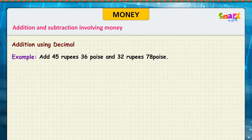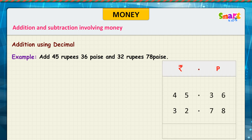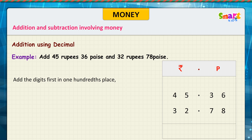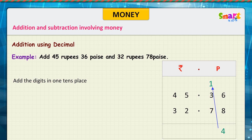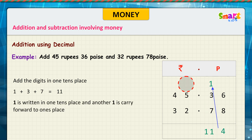Addition using decimal. Look at the problem. First, write 45 rupees 36 paise and 32 rupees 78 paise as 45.36 and 32.78. Add the digits first in the hundredths place. 6 plus 8 is equal to 14. 4 is written in the hundredths place, and 1 is carried forward. Then 1 plus 3 plus 7 is equal to 11. 1 is written in the tenths place, and another 1 is carried forward.